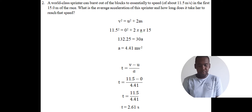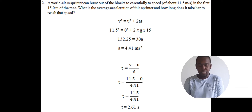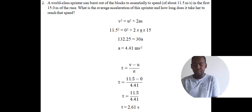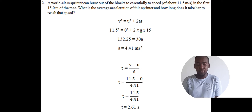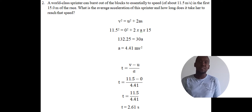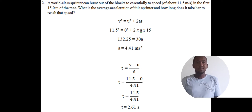Question two: a world class sprinter bursts out of the blocks to a speed of about 11.5 meters per second in the first 15 meters of the race. What's the average acceleration of the sprinter and how long does it take for her to reach that speed? This is a two-part question. She starts from the blocks, meaning she started from rest.